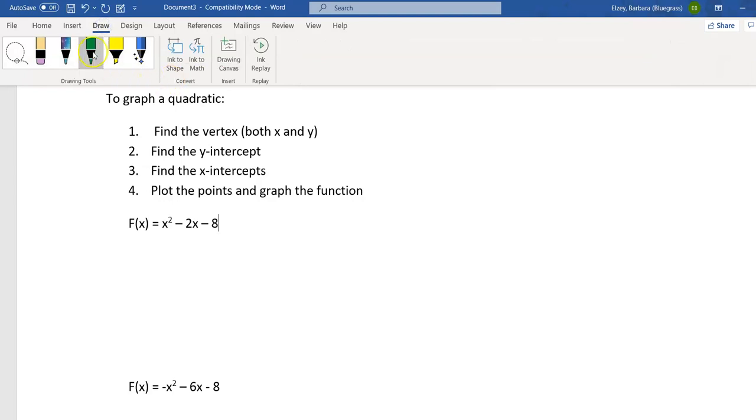Let's first find the vertex. We'll use that vertex formula, negative b over 2a. So negative b will be negative negative 2 is our b, and then let's notice that a is really a 1, so 2 times 1. So we will get 2 on top and 2 on the bottom, or an x value for our vertex of 1.